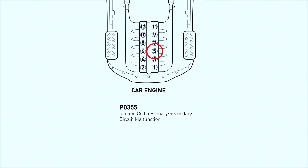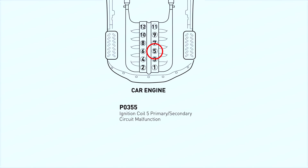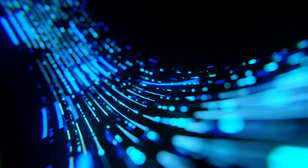So what exactly does the PO355 code mean? PO355 stands for Ignition Coil 5 Primary/Secondary Circuit Malfunction. It usually means there's an issue with the ignition coil or the wiring associated with it. This can cause engine misfires, poor performance, and even difficulty starting your vehicle.